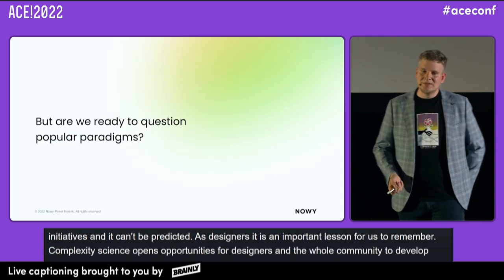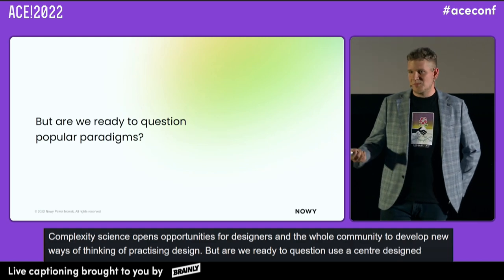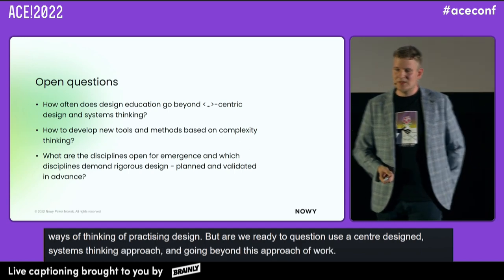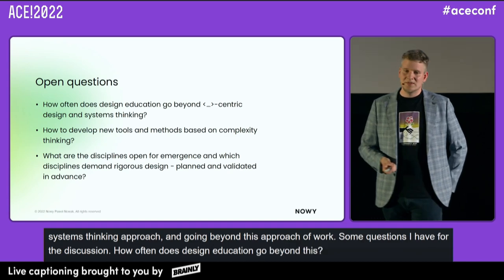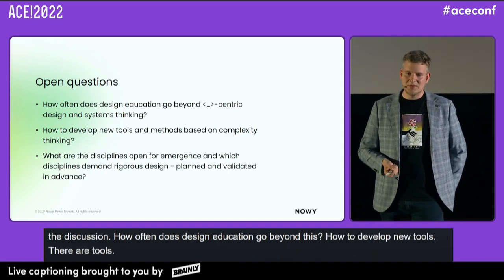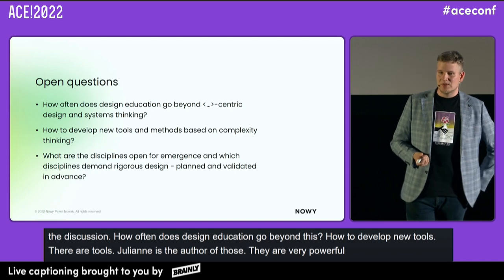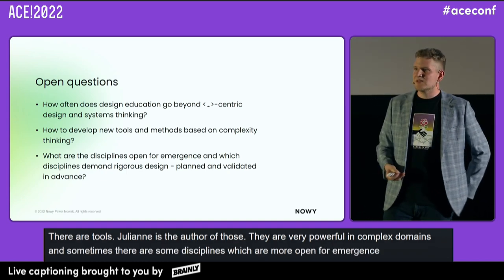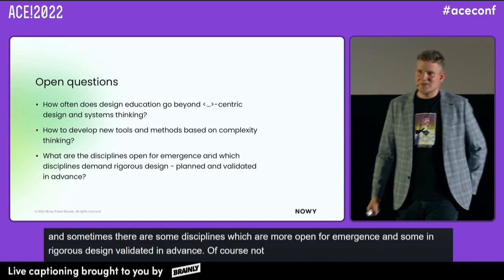But are we ready to question user-centered design, systems thinking, and go beyond these approaches? Some questions for discussion: how often does design education go beyond these two models? How do we develop new tools? There are tools — for example from Julian — that are very powerful in the complex domain. Some disciplines are more open to emergence, and some demand rigorous, planned, validated-in-advance design. These are the questions for you. If you have any questions for me, I'm open. Thank you.